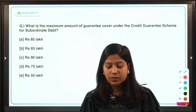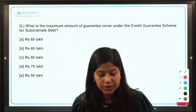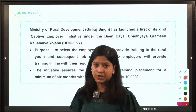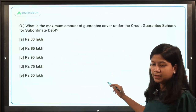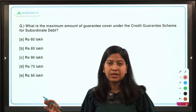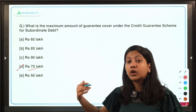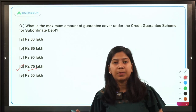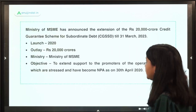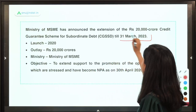The next question is: what is the maximum amount of guarantee cover under the Credit Guarantee Scheme for Subordinate Debt? This scheme has got an extension recently — that is why it is in the news. Under this scheme, the upper ceiling is Rs. 75 lakh. This scheme has been extended till 31st March 2023. It was launched in 2020 with an outlay of Rs. 20,000 crore by the Ministry of MSME.